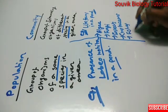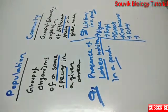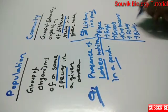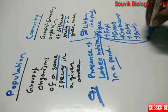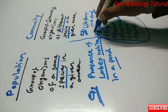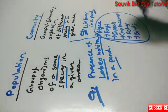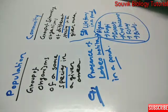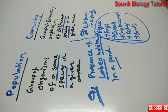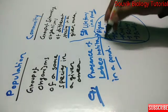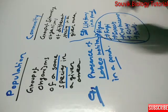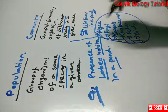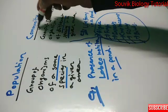Various kinds of fishes and birds are also present in a pond, all interacting with each other. Many kinds of algae, fungi, insects, and crustaceans are present in the pond, and they interact with each other to form a community.